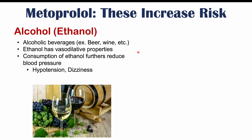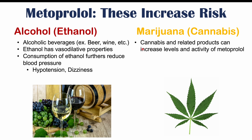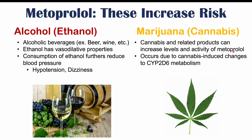Another substance that can interact with metoprolol is marijuana or cannabis. Cannabis and related products can increase levels and activity of metoprolol due to cannabis-induced changes to CYP2D6 metabolism. Because metoprolol is metabolized through this enzyme, cannabis can cause alterations in CYP2D6 activation, leading to higher levels of metoprolol. It's best to reduce or avoid cannabis use when taking metoprolol.